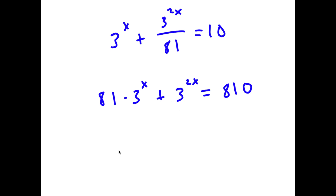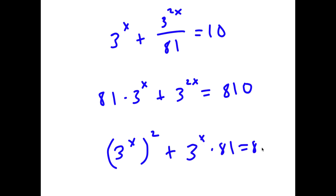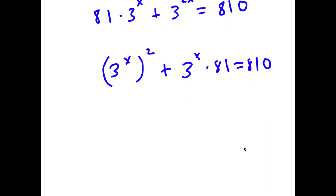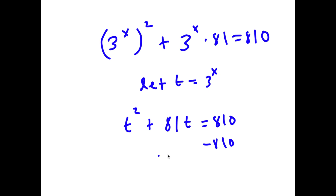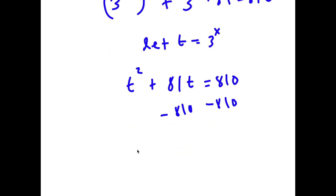Now 3 to the power of 2x is the same thing as 3 to the power of x to the power of 2, so I have 3 to the power of x squared plus 81 times 3 to the power of x is equal to 810. I'm going to let the variable t equal 3 to the power of x. So now I have t squared plus 81t is equal to 810. If I subtract 810 on both sides, I get t squared plus 81t minus 810 is equal to 0. To solve this, we have to use the quadratic formula.